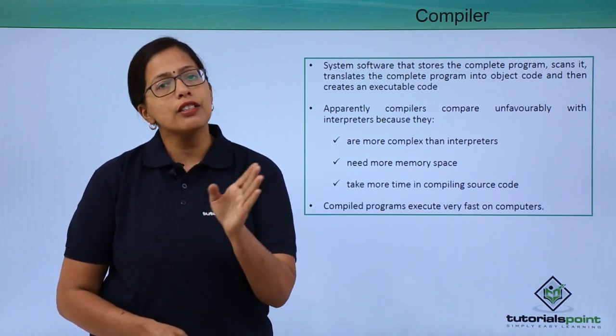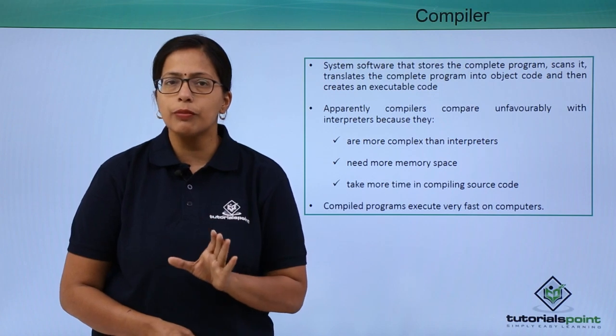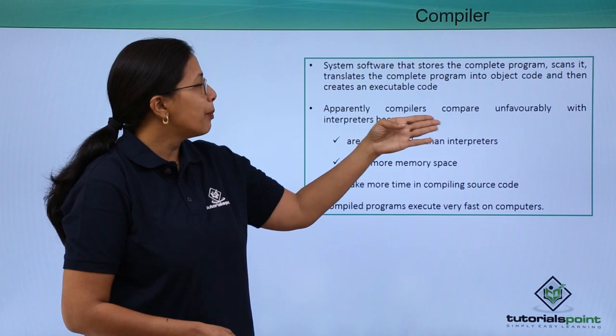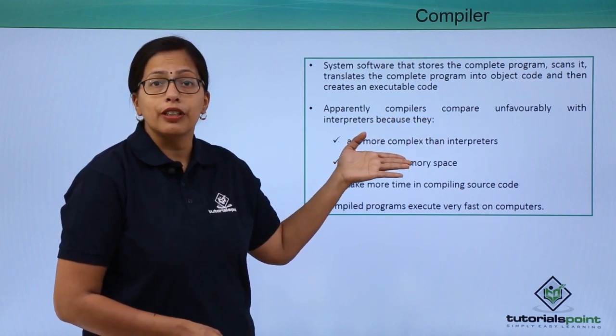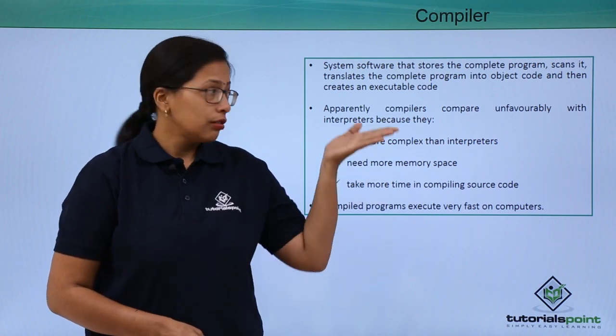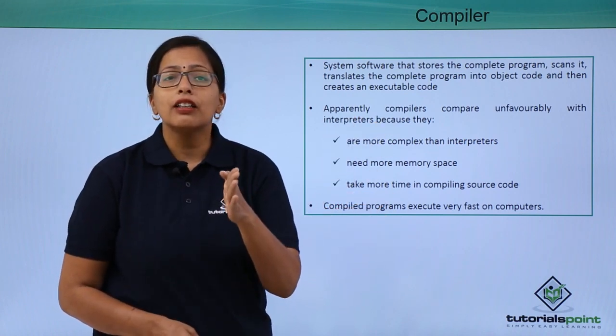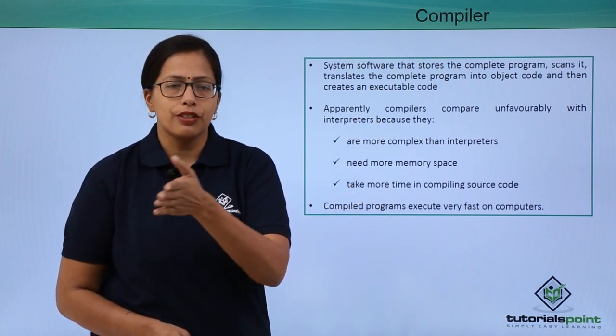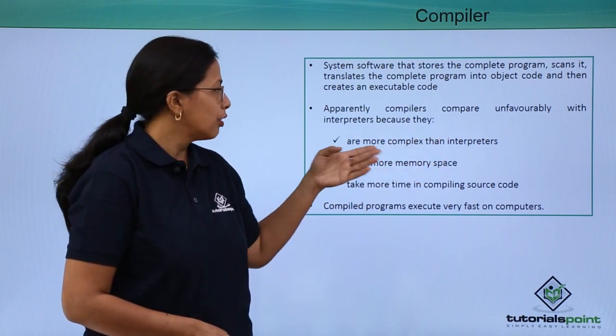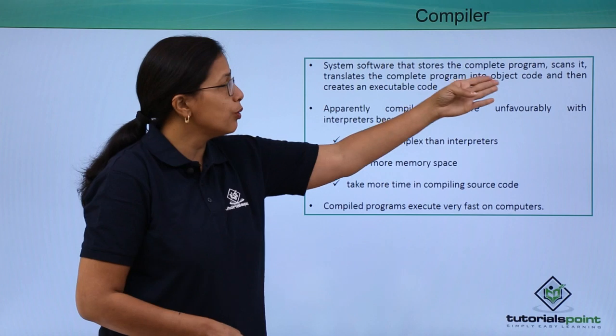Apparently compilers compare unfavorably with interpreters. We discussed in our previous video about interpreters. I'm saying here that they are not better than interpreters because they are more complex than interpreters. Why are they more complex? Because they are doing so many things - they are storing it, scanning it, and then converting it into executable code. It needs more memory space because it is doing lots of functions.